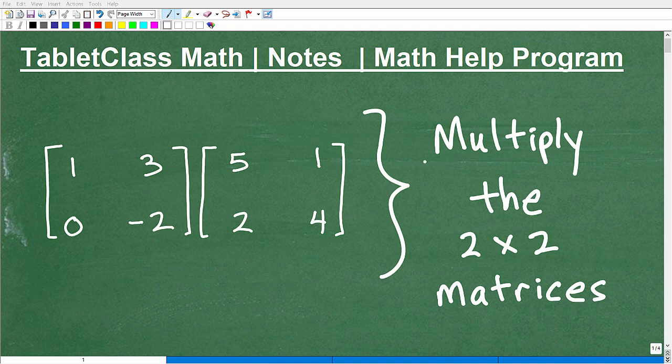Okay, let's talk about how to multiply 2 by 2 matrices. We're going to do this particular problem right here as our example. But multiplying matrices, when you're first learning it, can be very confusing. Over the years, I've seen plenty of math students struggling, getting the wrong answer. What's going on? Help!